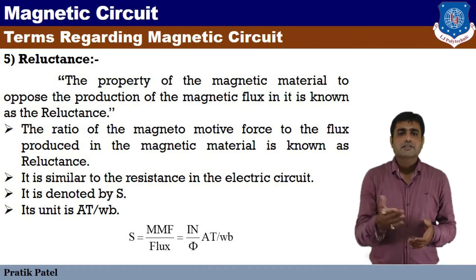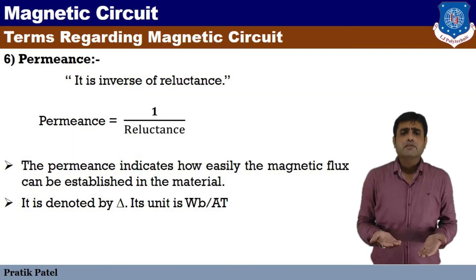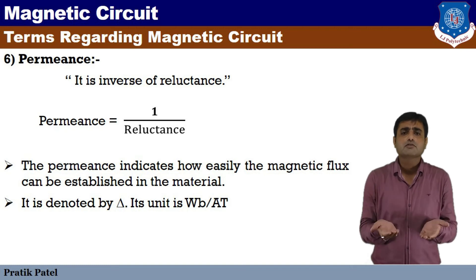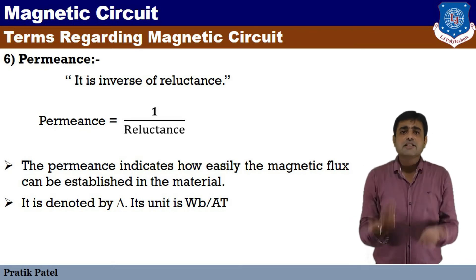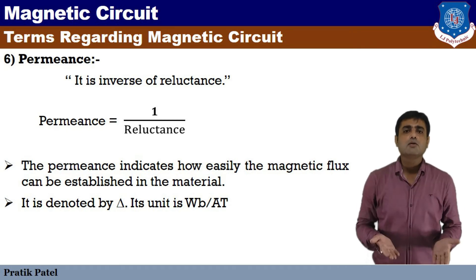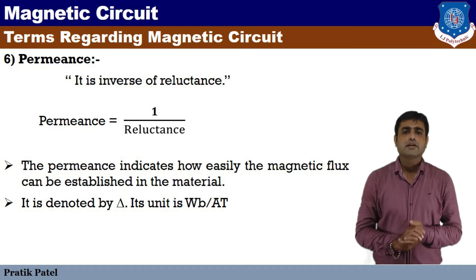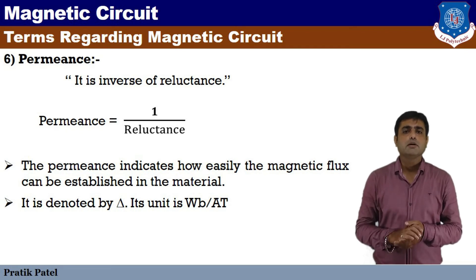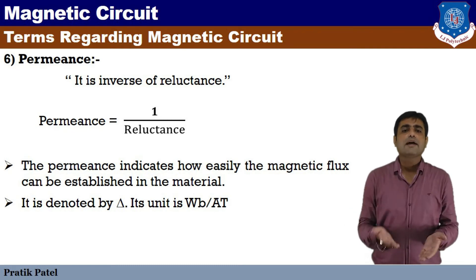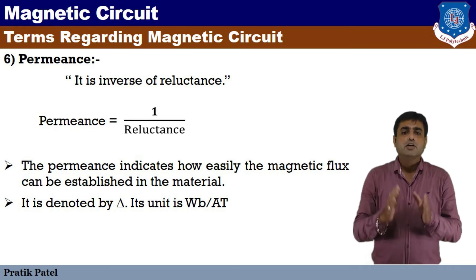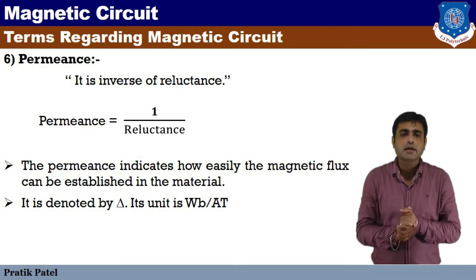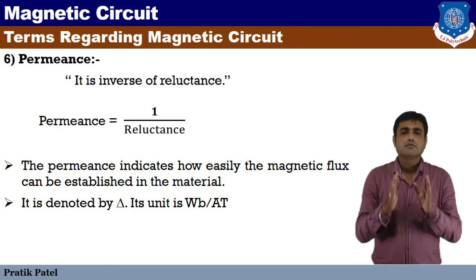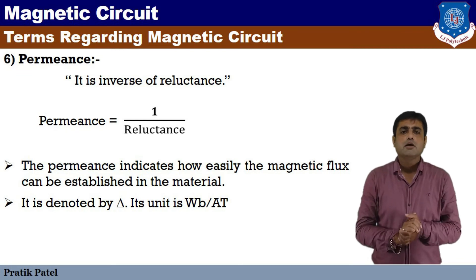Next term is permeance. Permeance indicates how easily the magnetic flux can be established in the material. It is the inverse of reluctance. Permeance is equal to 1 upon reluctance. It is denoted by delta, and its unit is Weber per Ampere-turn.